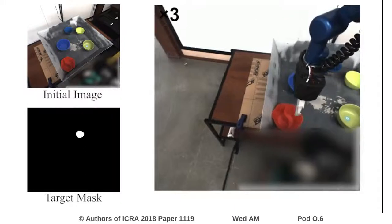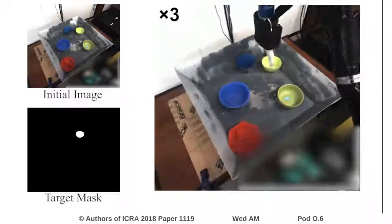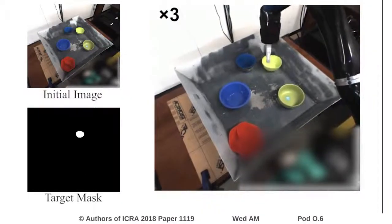In this work, we aim to train a neural network model to control a robot arm to do instance grasping in a cluttered scene.